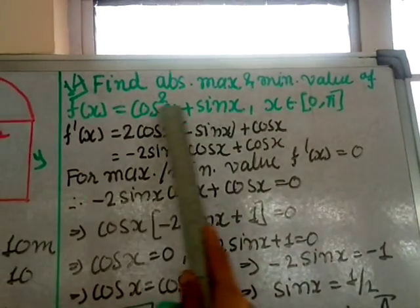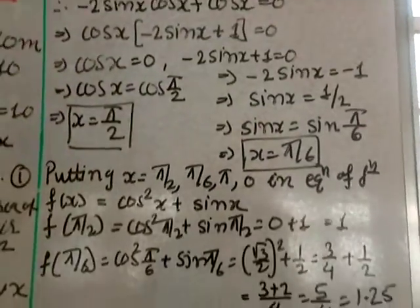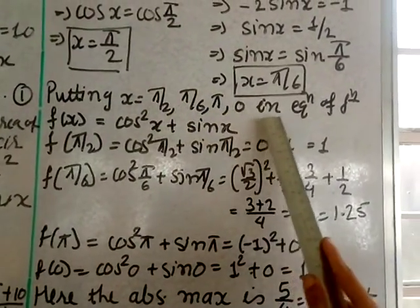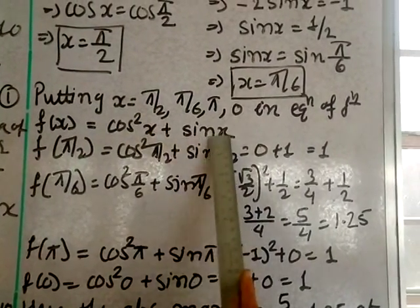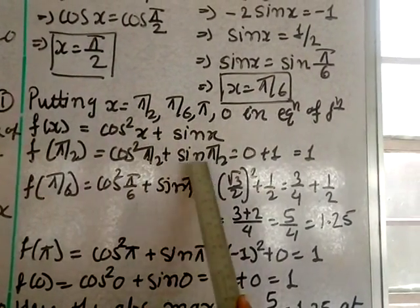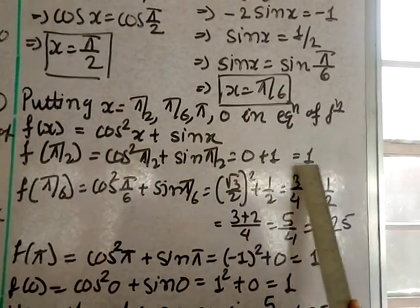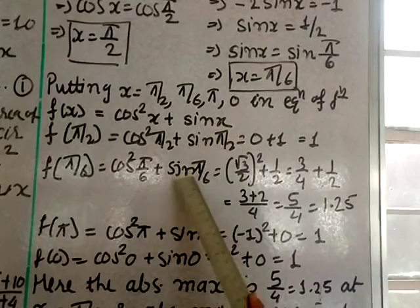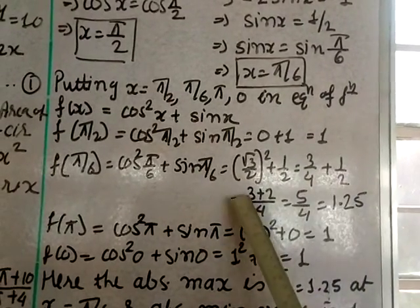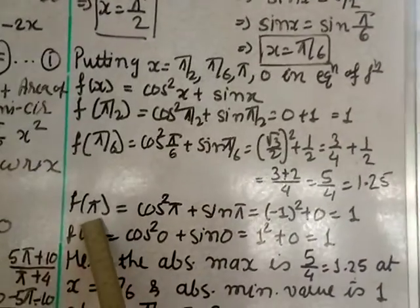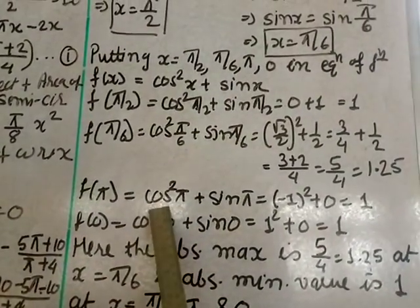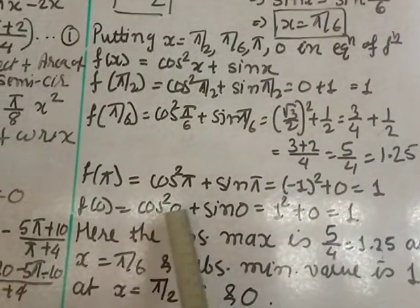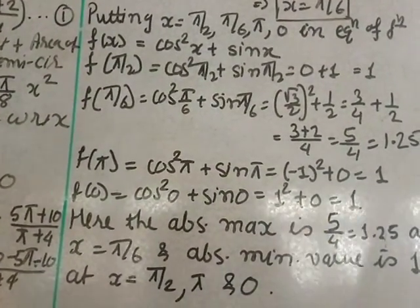The critical points within [0, π] are x = π/6 and x = π/2. Also check endpoints x = 0 and x = π. Evaluating: f(π/2) = cos²(π/2) + sin(π/2) = 0 + 1 = 1. f(π/6) = cos²(π/6) + sin(π/6) = (√3/2)² + 1/2 = 3/4 + 1/2 = 5/4 = 1.25. f(π) = cos²π + sin π = 1 + 0 = 1. f(0) = cos²0 + sin 0 = 1 + 0 = 1.